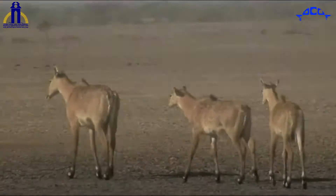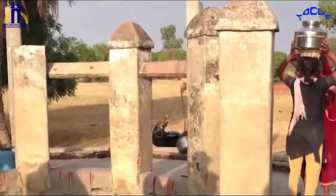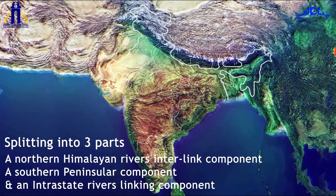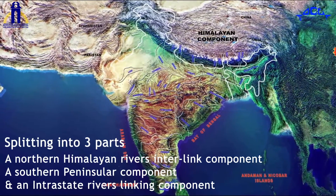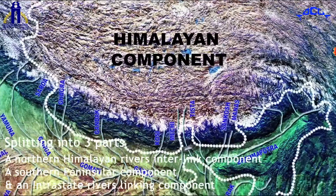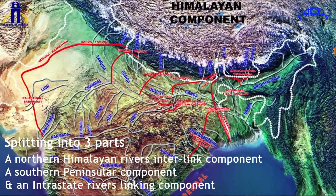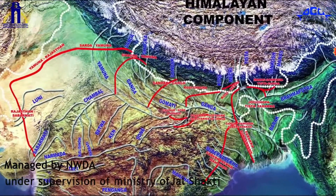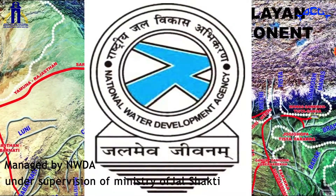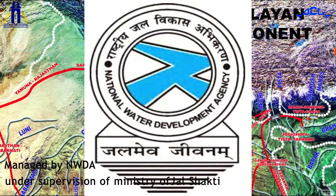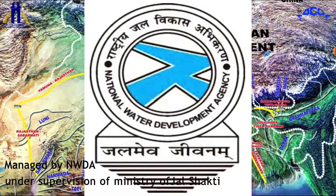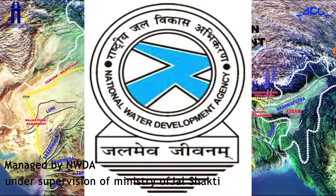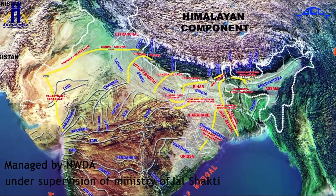The Interlink Project has been planned to proceed by splitting into three parts: a Northern Himalayan Rivers Interlink Component, a Southern Peninsular Component, and an Intrastate Rivers Linking Component. This project is being managed by India's National Water Development Agency, NWDA, under the supervision of the Ministry of Jal Shakti of the Government of India.